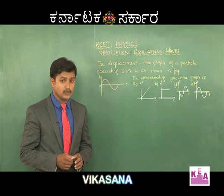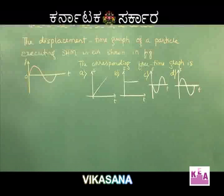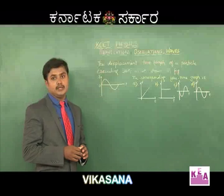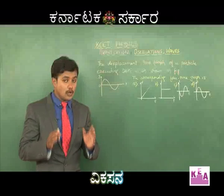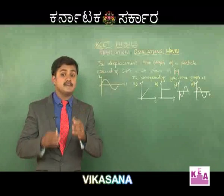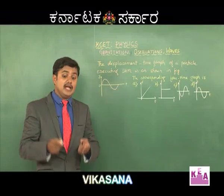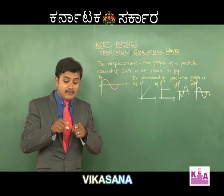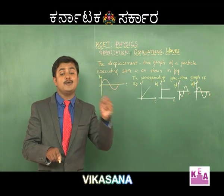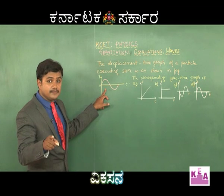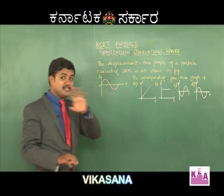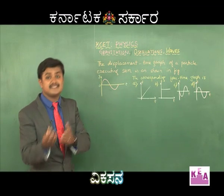Now let us take up one more problem based on graphs. A displacement-time graph of a particle undergoing SHM is given, and we need to find the corresponding force-time graph from four options. This problem is based on going from graph to equation, then from equation to equation, and finally from equation to graph. The displacement-time graph is given; we need the force-time graph.